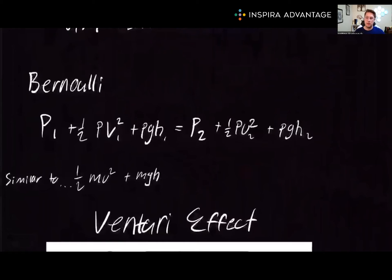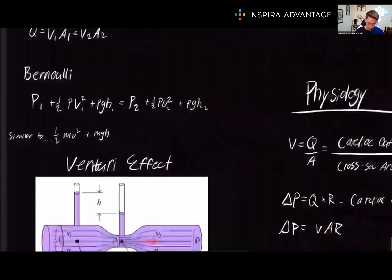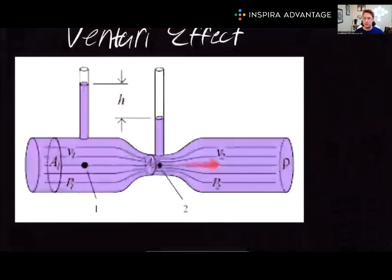Bernoulli's equation states that the sum of static pressure and dynamic pressure is constant between any two points in a closed system. This brings us to the Venturi effect. As fluid passes through a constricted area, its velocity increases and its static pressure decreases. Imagine a river narrowing into a gorge – the water speeds up and the pressure drops.